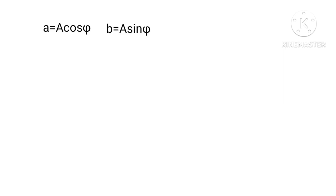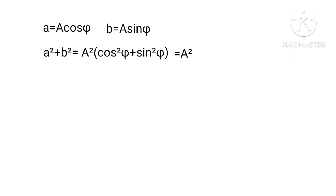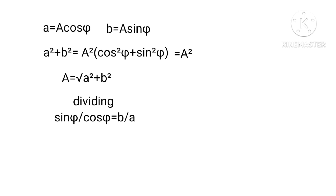Now squaring and adding, with A equals a cosφ and B equals a sinφ, we get A² plus B² equals a²(cos²φ + sin²φ) equals a². This implies that a equals the square root of (A² + B²). Dividing, we get sinφ upon cosφ equals B upon A, hence tanφ equals B/A, and φ equals tan⁻¹(B/A).